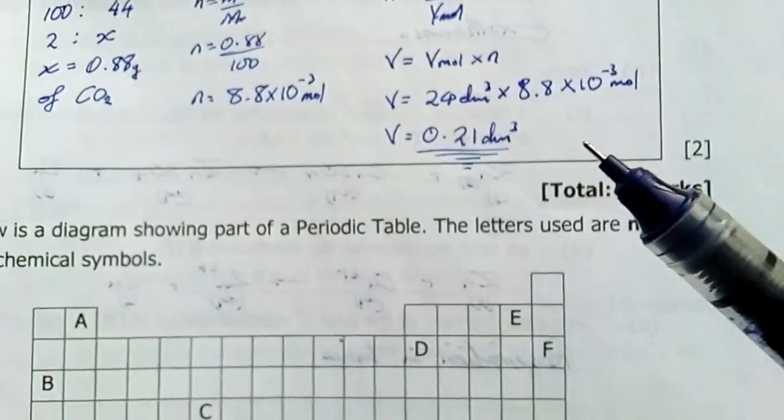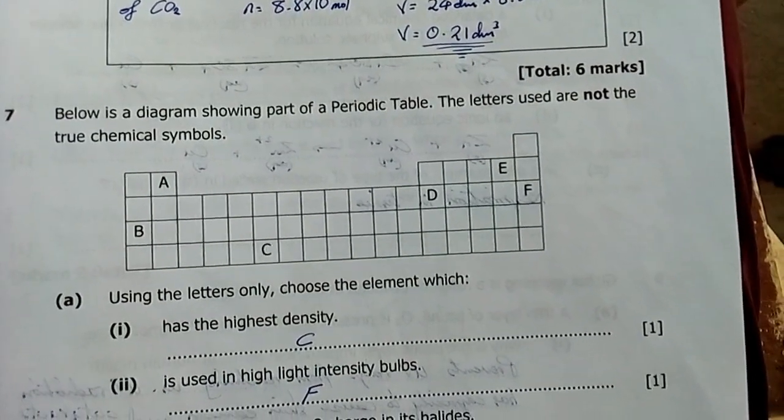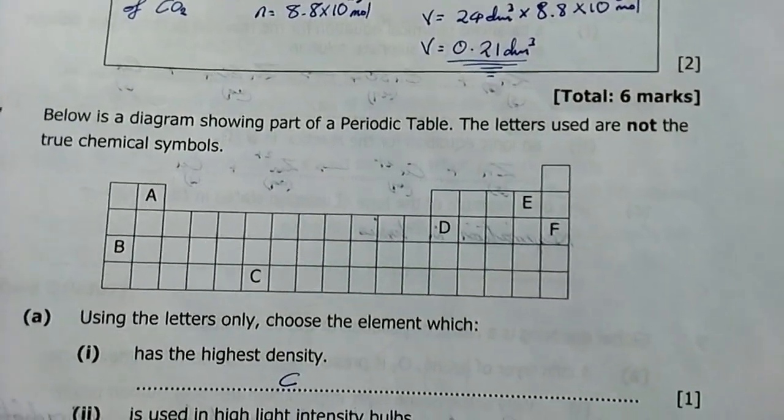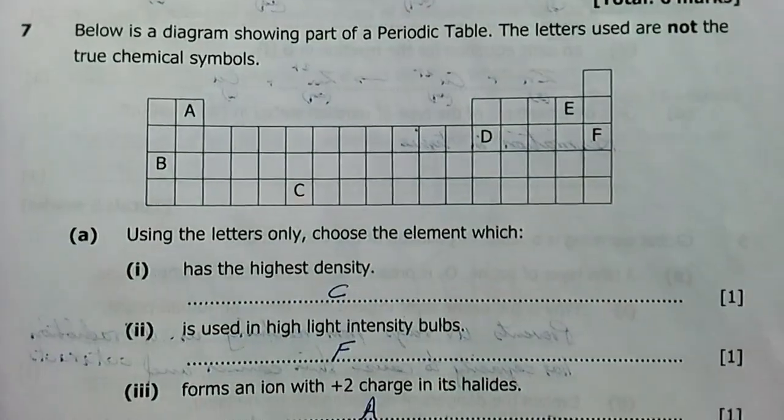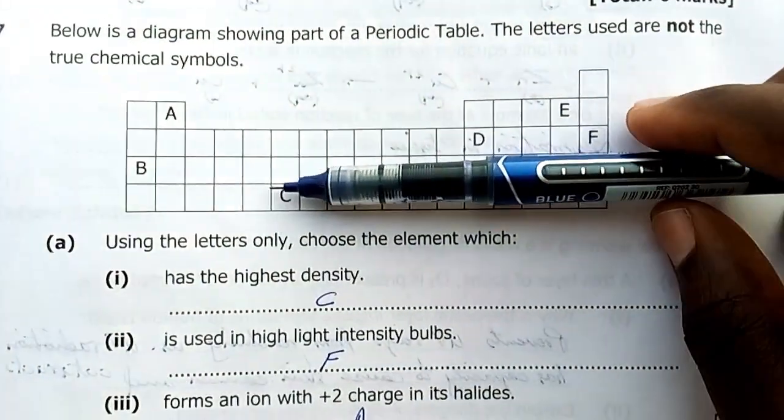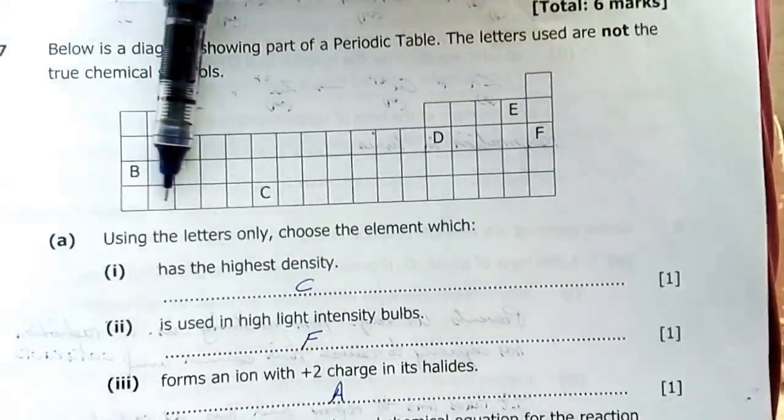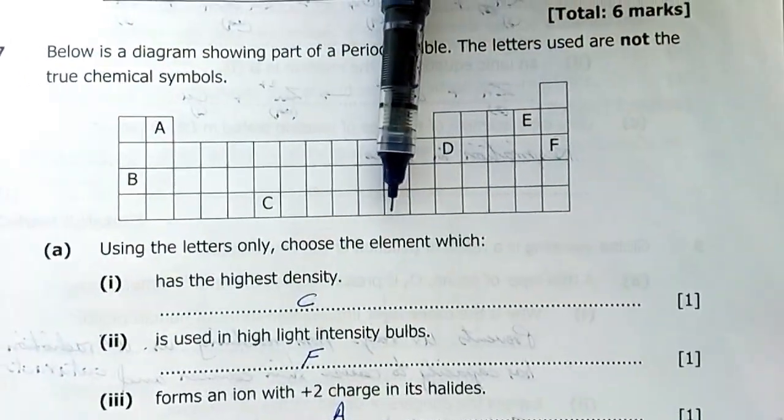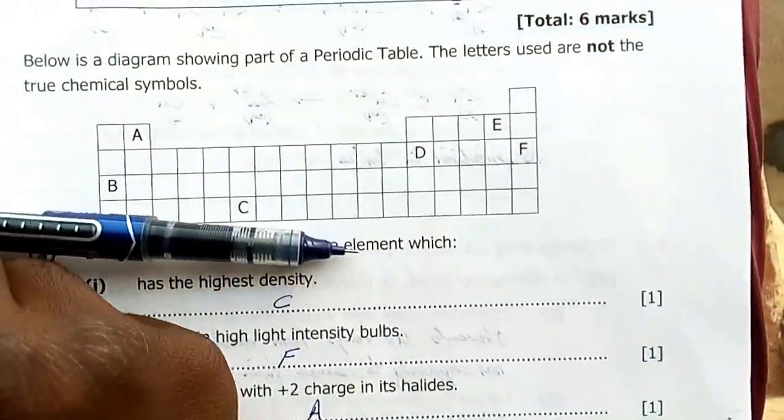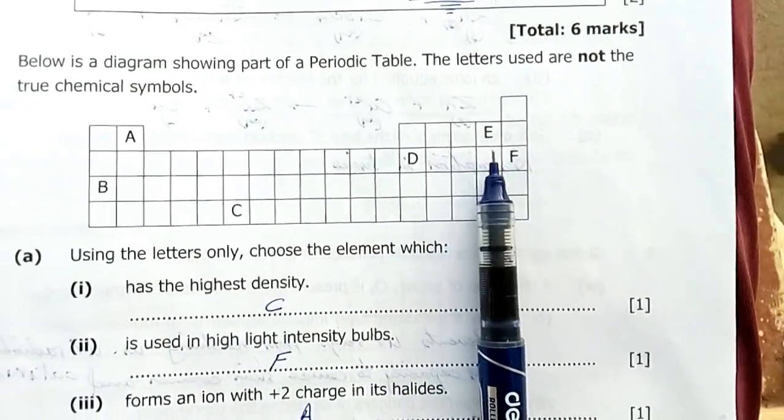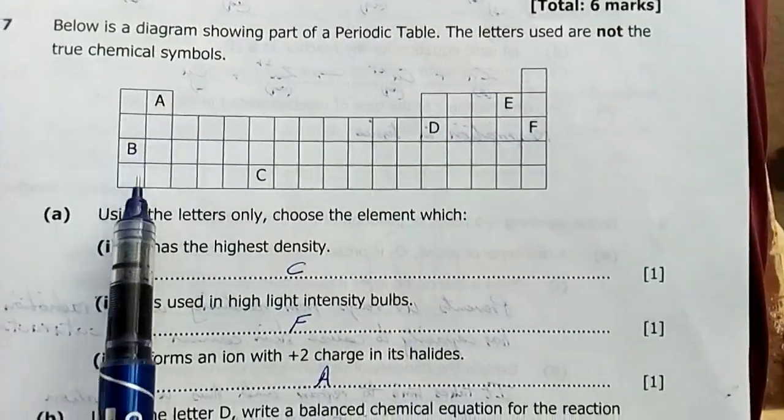Question 7: Below is a diagram showing part of the periodic table. The letters used are not true chemical symbols. As you go in this direction, the metallic character among elements increases as you go down in any group. The metallic character also increases, but among the non-metals, as you go in this direction the non-metallic character increases, and as you go up in the group, the non-metallic character also increases.